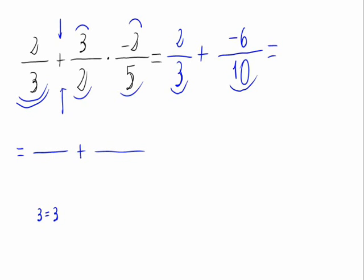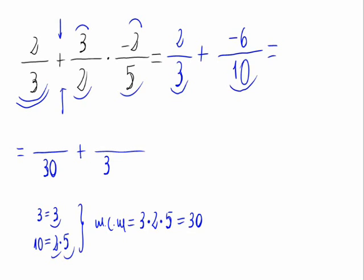3 is already a prime number, so it can't be reduced. And 10 can be expressed as 2 times 5. The lowest common multiple is 3 times 2 times 5 as they appear on the factorization of the numbers. This is equal to 30. We write it on the denominators.